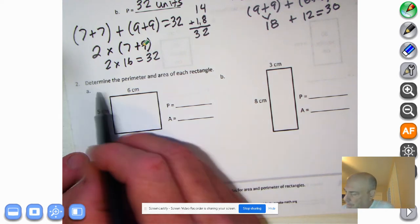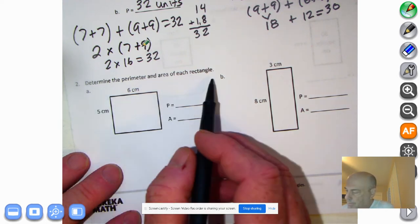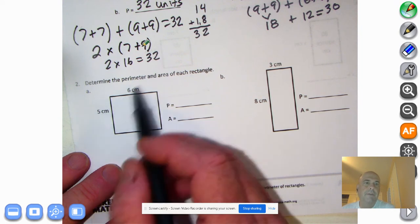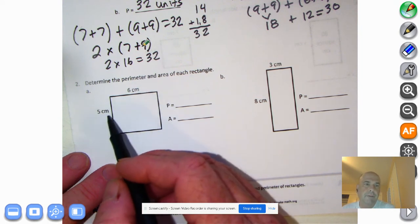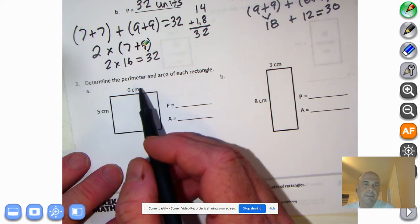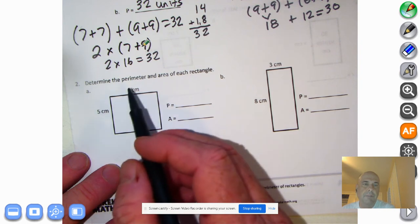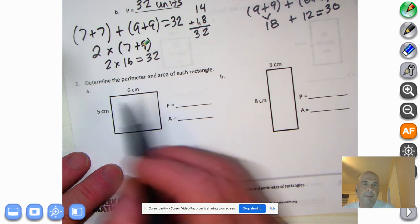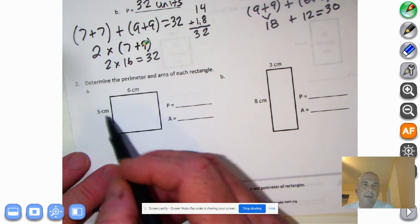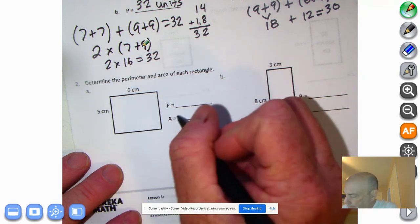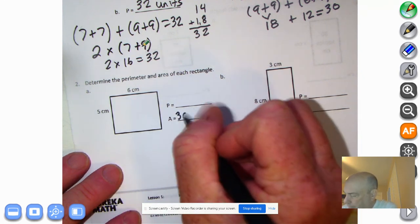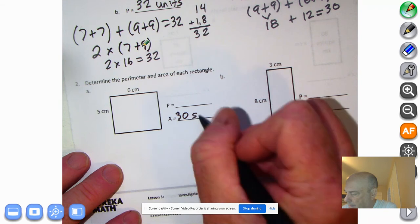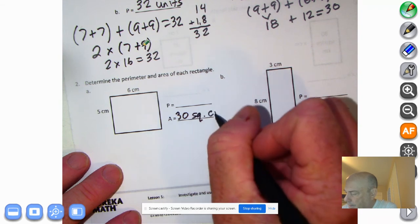And welcome back. So it says determine the perimeter and area for each rectangle. Notice they're giving us the measurements now. Five centimeters times six centimeters. They gave us the measurement, the unit of measurement. We have to write that in our answer. So five times six is 30. And we have to put square centimeters to get the answer correct.